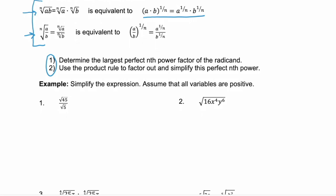In example one, we're going to simplify the expression, assuming that all variables are positive. Here we're given the square root of 45 divided by the square root of 5. I don't know the square root of 45, and the square root of 5 — well, 5 is not a perfect square, so that's not going to be easy.